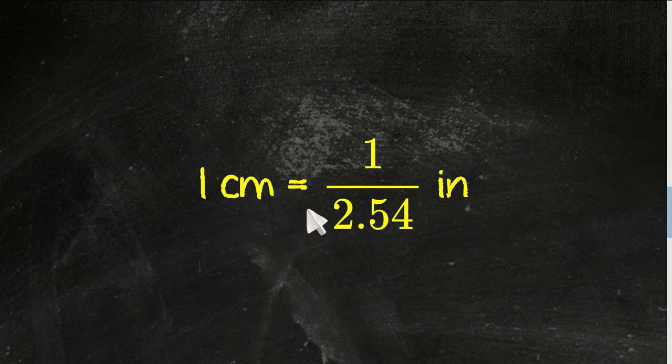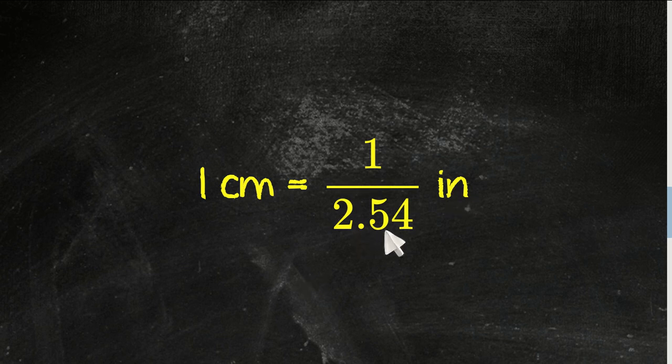So, 1 centimeter equals 1 over 2.54 inches. That's the formula.